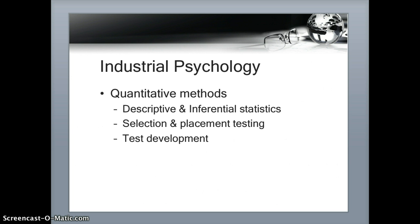In test development, they'd be concerned with internal consistency, standard error of measurement, and item analysis — including difficulty and discrimination. Internal consistency requires the use of different formulas depending upon the type of data. Common measures include the Cronbach Alpha and the KR20 for internal consistency, and Cohen's Kappa for inter-rater reliability.